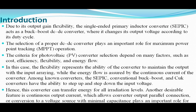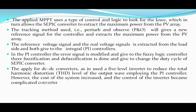The selection of a proper DC-DC converter plays an important role for maximum power point tracking. The criteria in selection of a PV voltage converter depend on many factors such as cost, efficiency, flexibility, and energy flow. Flexibility represents the ability of a converter to maintain outputs without the input varying, while energy flow is assured by the continuous current of the converter. Among known converters, SEPIC, the conventional buck-boost converters have the ability to step up and step down input voltage. The applied MPPT uses a type of control logic to look for the knee point, allowing the SEPIC converter to extract maximum power from the PV array. The tracking method is the Perturb and Observe method.